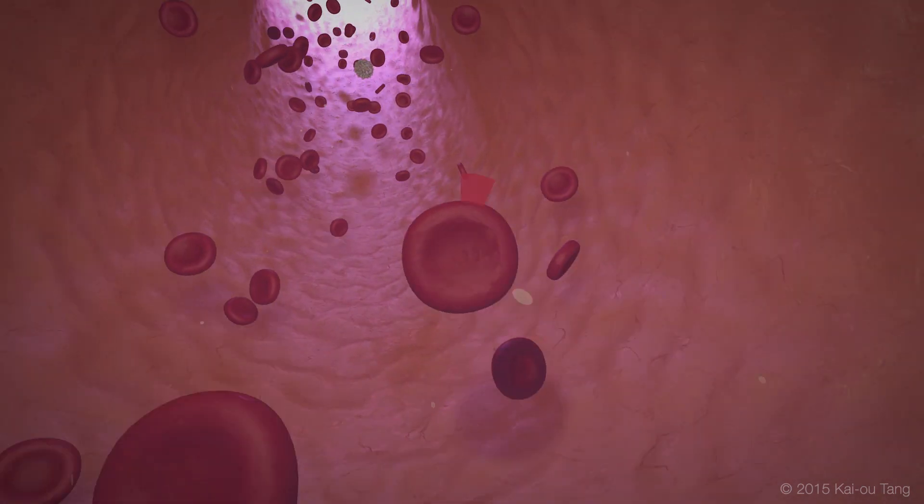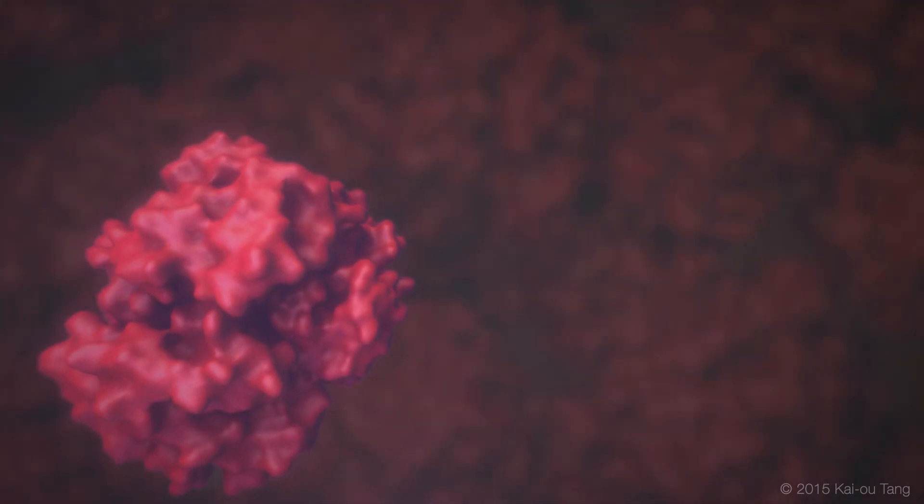Red blood cells acquire their red coloration and are able to carry and deliver oxygen throughout the body due to their rich supply of the protein hemoglobin.